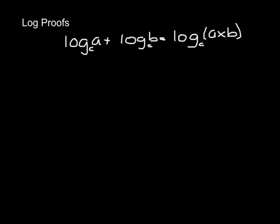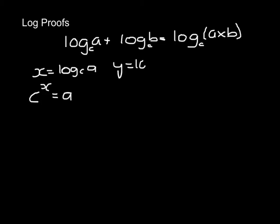The proof through the formulas of logs — we're going to start with the addition. As always we work on the left hand side, and I'm going to let x equal log to base c of a. That means that c to the power x has to be a. If we let y equal log to base c of b, then c to the power y has to equal b.